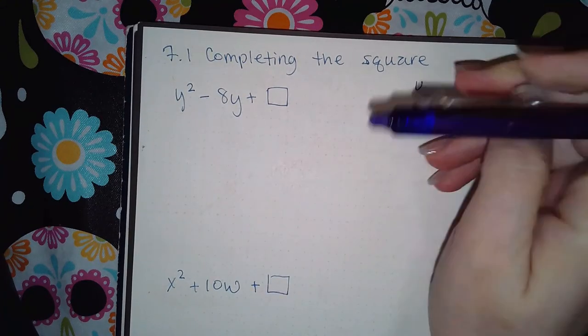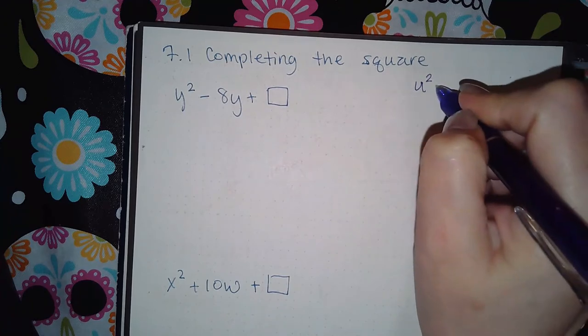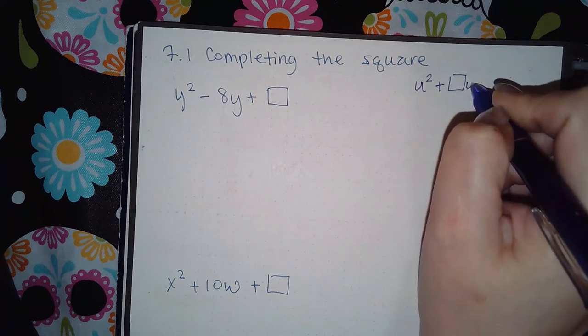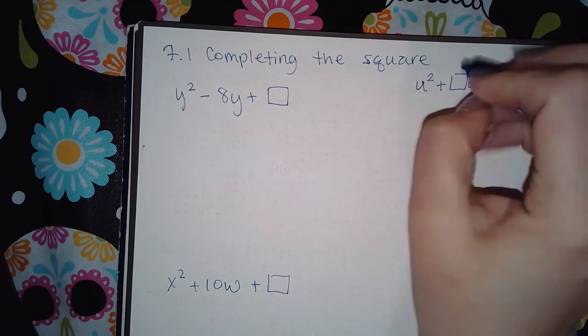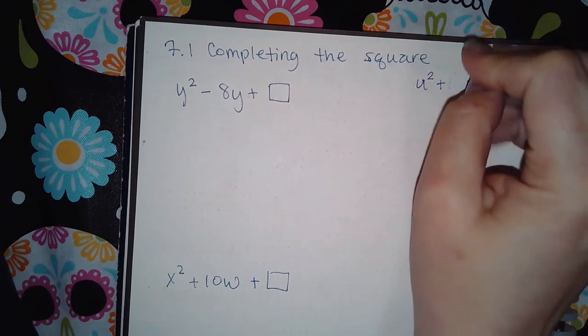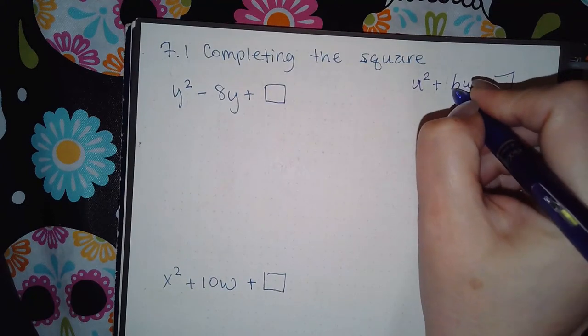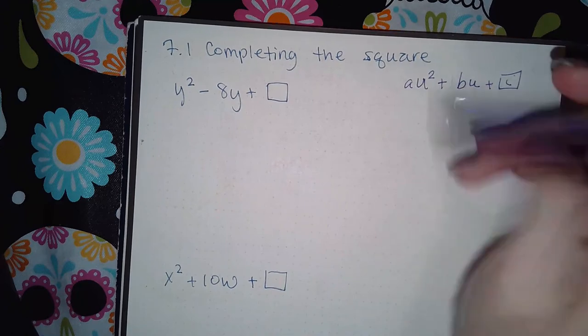It doesn't matter what the variable is, so it will be some variable squared plus some coefficient and then plus an empty box. So normally when we write these quadratics like this, this is always referred to as B. The number in front here is A and this one is usually C.